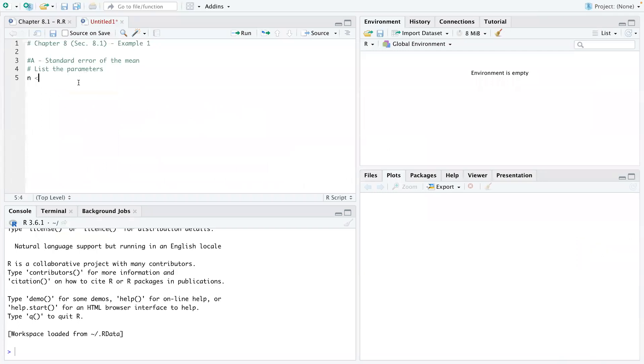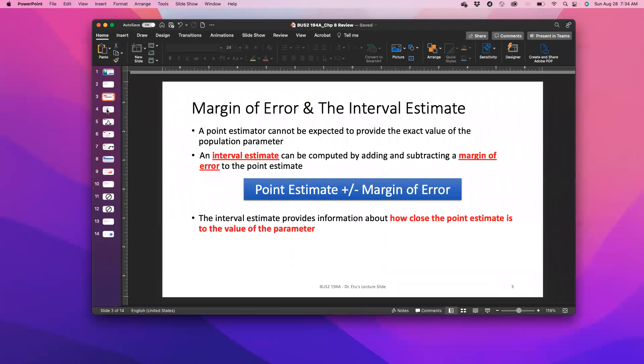So N is, we store N as 60, X bar as 35, and then sigma as 5. And then the next thing we want to do is to write out the equation for standard error. And I showed you guys what that equation is in class, but I'm going to show it to you here again, just in case you forget.